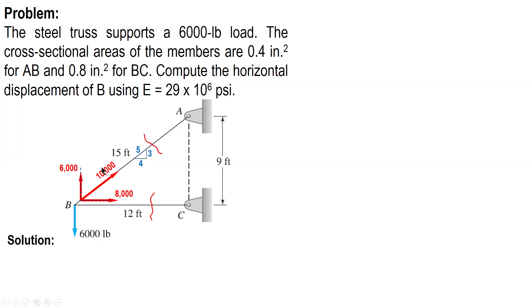For the magnitude of BA, it's tensile. The value is by ratio and proportion: 6,000 divided by 3, 2,000 times inclined 5, so 10,000. For BC, to balance the horizontal forces, this force will be resisted by BC. The force in BC is 8,000 directed to the left. BC is in compression while BA is in tension.